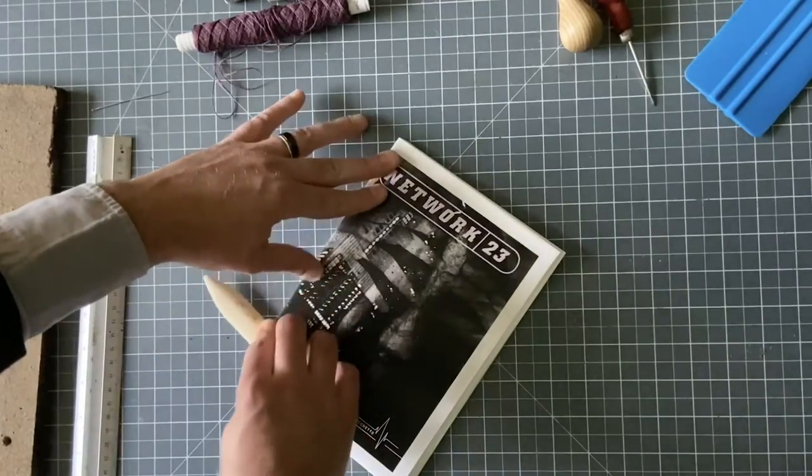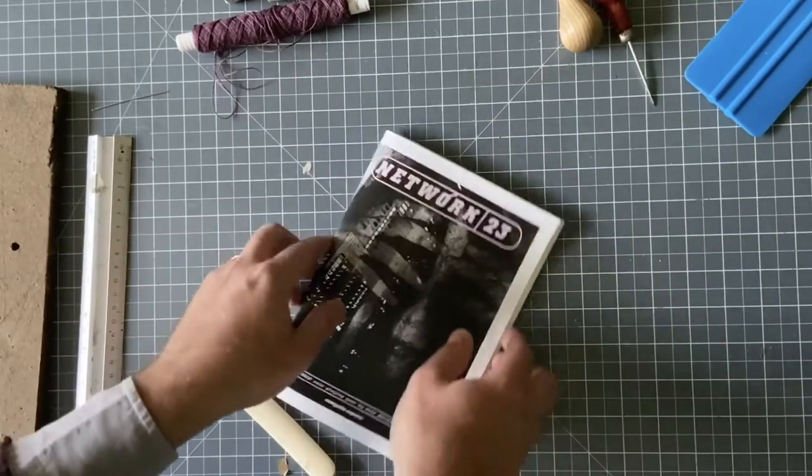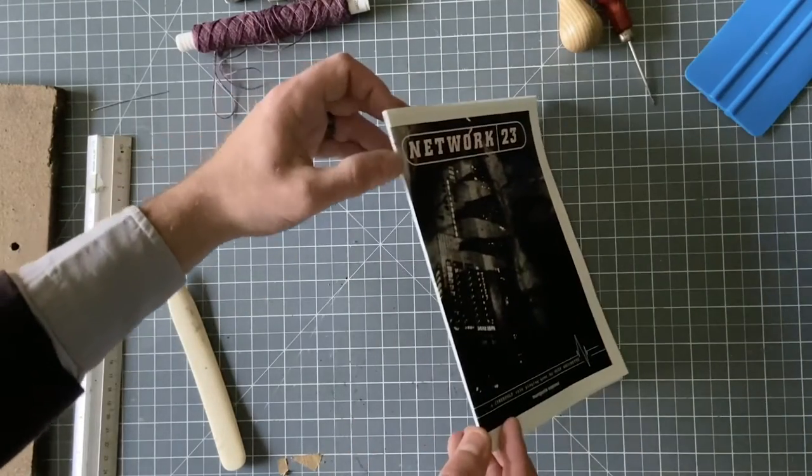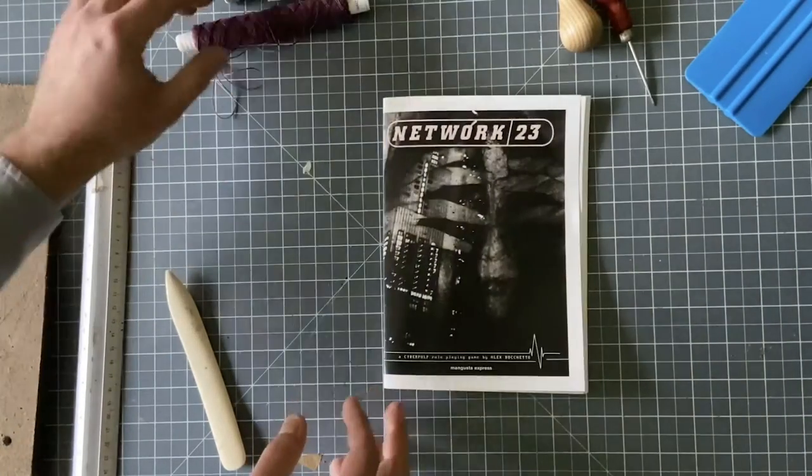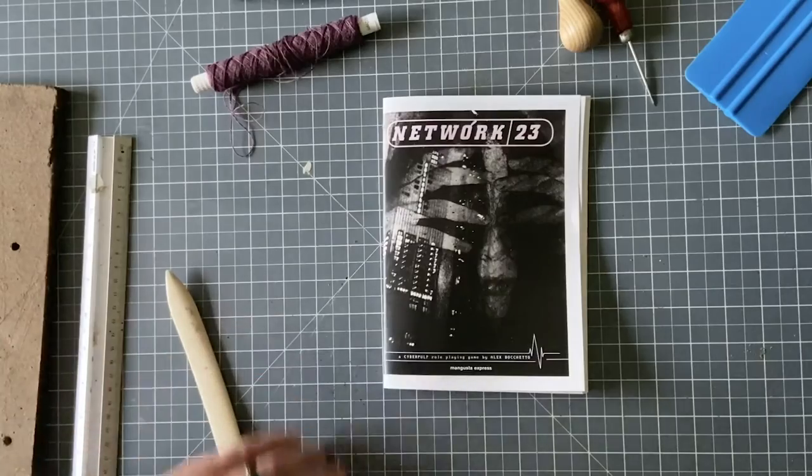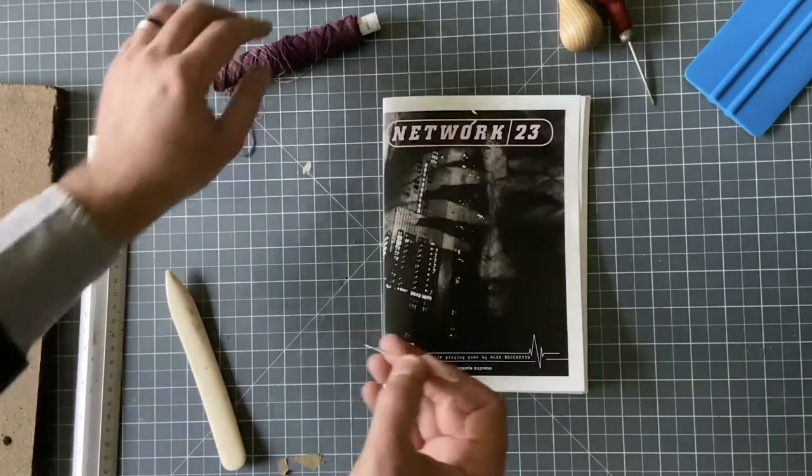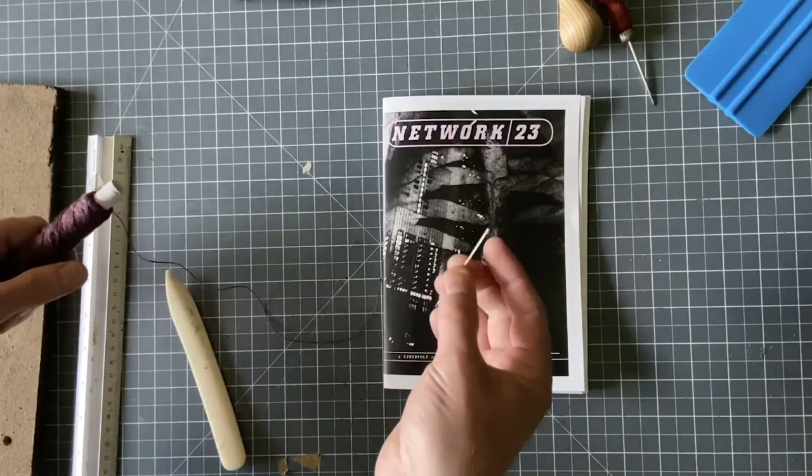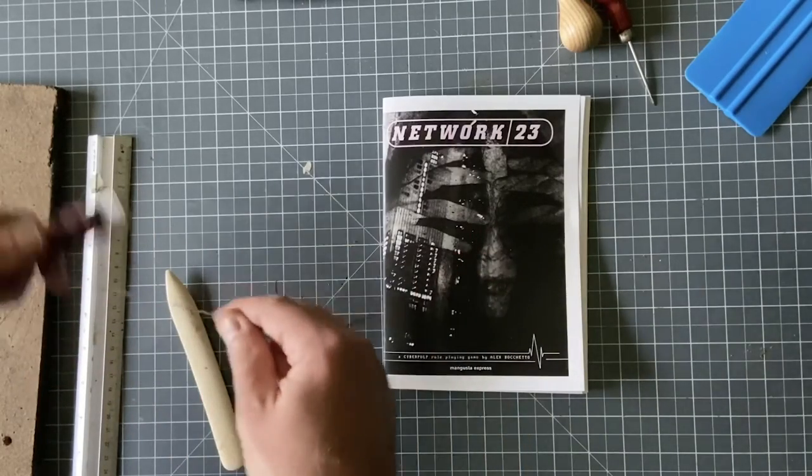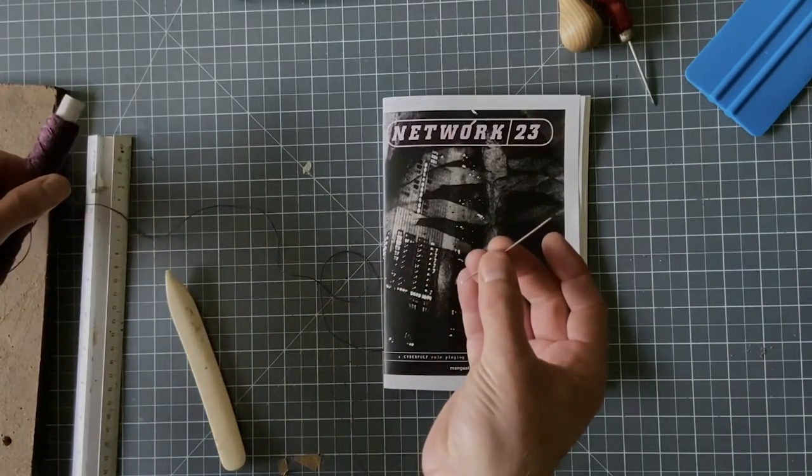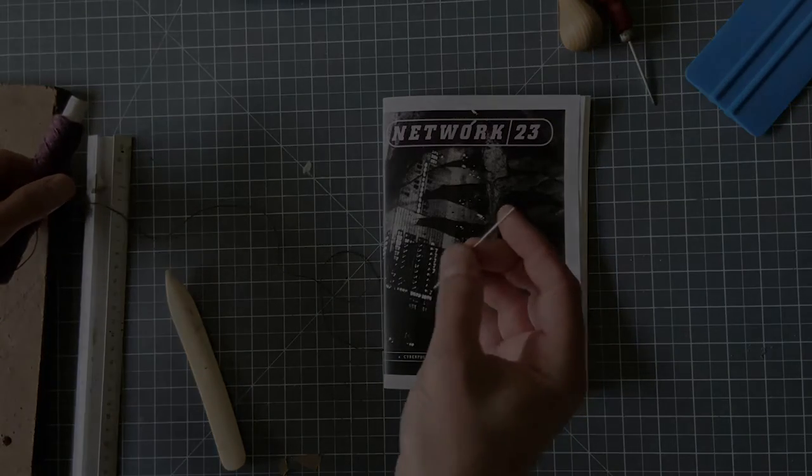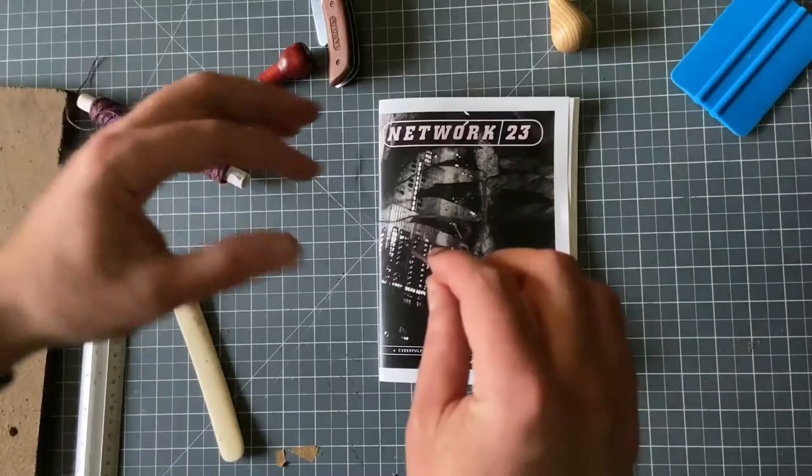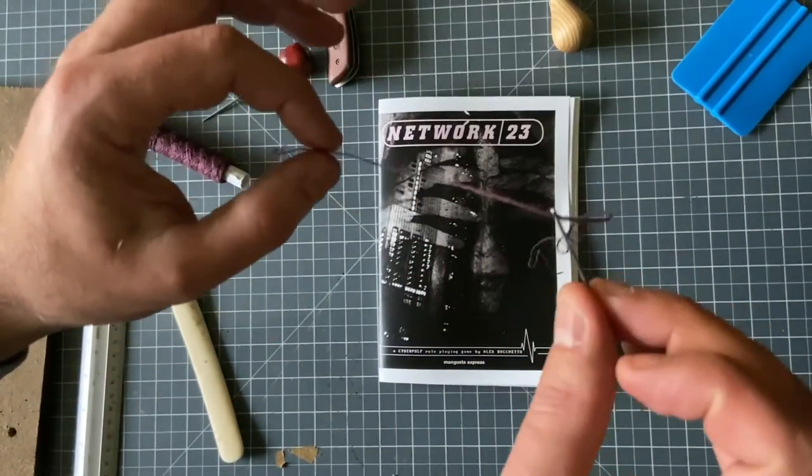Now we have our zine, it's folded and got three holes here. Next step, it's going to be binding. For this we're going to use binding needle, just like a standard needle, it's just a bit longer.